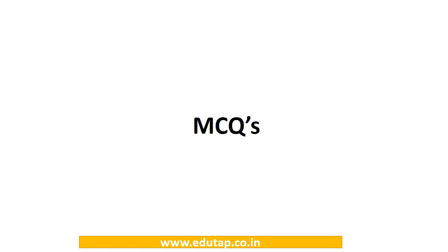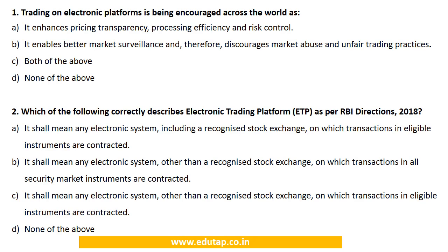MCQ 1: Trading on electronic platforms is being encouraged across the world as — (a) it enhances pricing transparency, processing efficiency, and risk control; (b) it enables better market surveillance and therefore discourages market abuse and unfair trading practices; (c) both of the above; (d) none of the above. We have seen that trading on electronic platforms is being encouraged for both these reasons as mentioned in the bi-monthly monetary policy of RBI. The answer is option C.